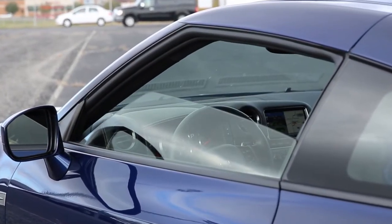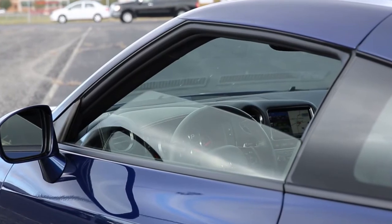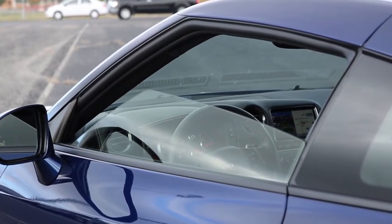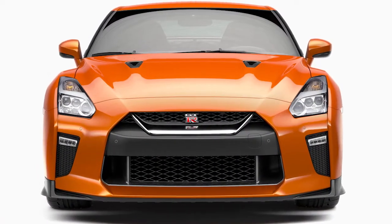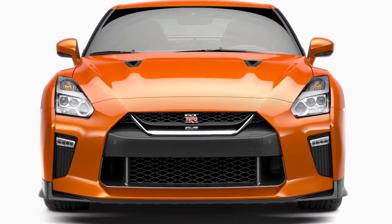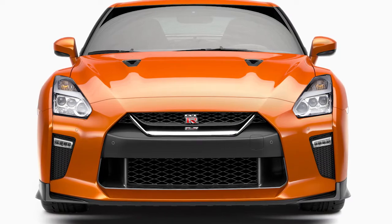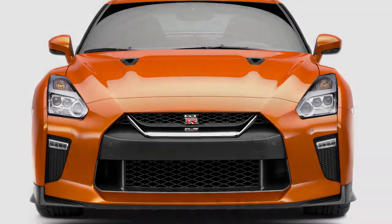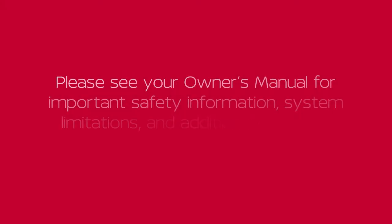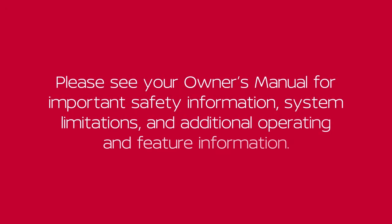If you have taken the appropriate steps and the power window automatic function does not operate properly, we recommend you see your Nissan dealer for further assistance. Please see your owner's manual for important safety information, system limitations, and additional operating and feature information.